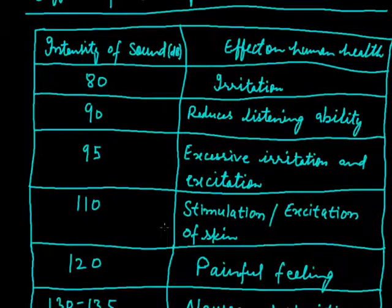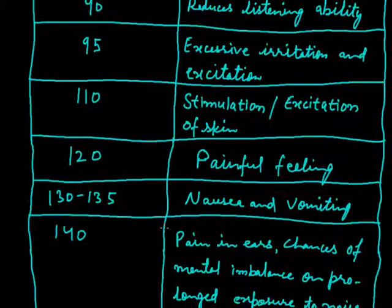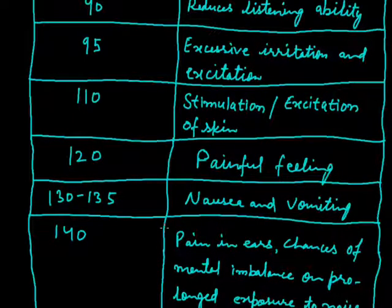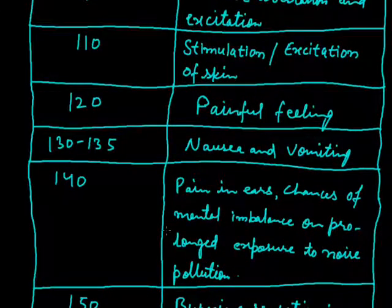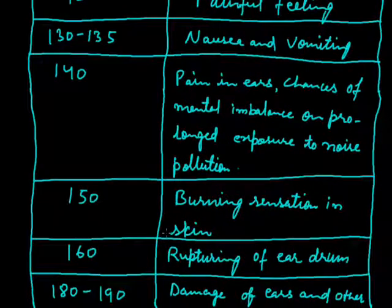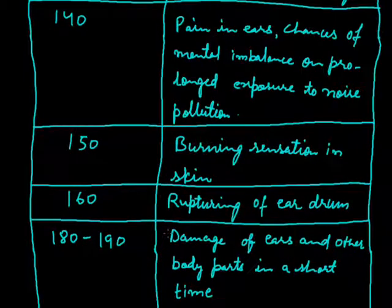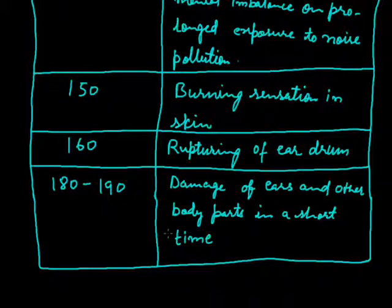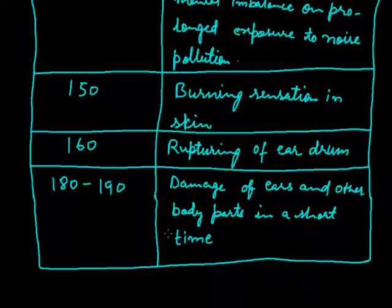If intensity is between 130 to 135 Decibel, it starts creating nausea and vomiting in human beings. If intensity goes up to 140 Decibel, there is pain in ears and chances of mental imbalance if there is prolonged exposure. If intensity is 150 Decibel, burning sensation in skin is caused. At 160 Decibel intensity, the eardrum ruptures. If intensity is between 180 to 190 Decibel, damage of ears and other body parts occurs in a very short time period.